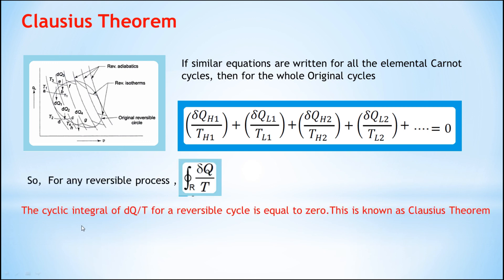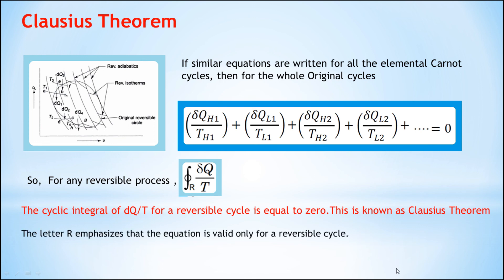Therefore, the cyclic integration of δQ/T for a reversible cycle equals zero. This is known as the Clausius theorem, where the suffix R represents the reversible cycle, emphasizing that this equation is valid only for a reversible cycle. Thank you for watching this video.